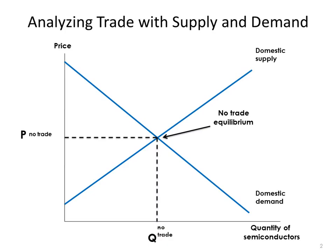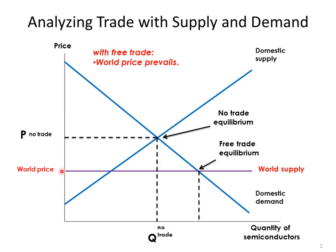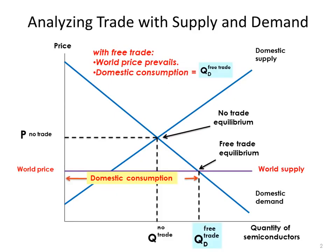Now suppose consumers in this country can buy as much of these semiconductors as they want at the world price. With complete free trade, consumers would be able to buy as much as they want at the world price, as given by the world supply curve. The free trade equilibrium involves greater consumption — at the higher no-trade price, quantity demanded is lower, but with free trade consumers buy at the lower world price, so quantity demanded increases to QD free trade.